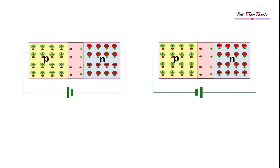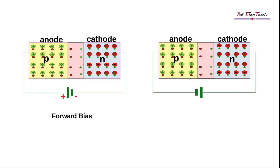A forward bias is produced when the anode, or P side, of the PN junction diode is connected to the positive terminal of the DC source and the cathode, or N side, is connected to the negative terminal of the DC source. Similarly, when the anode and cathode are connected to the negative terminal and positive terminal respectively of the DC source, the whole circuit is called reverse bias.